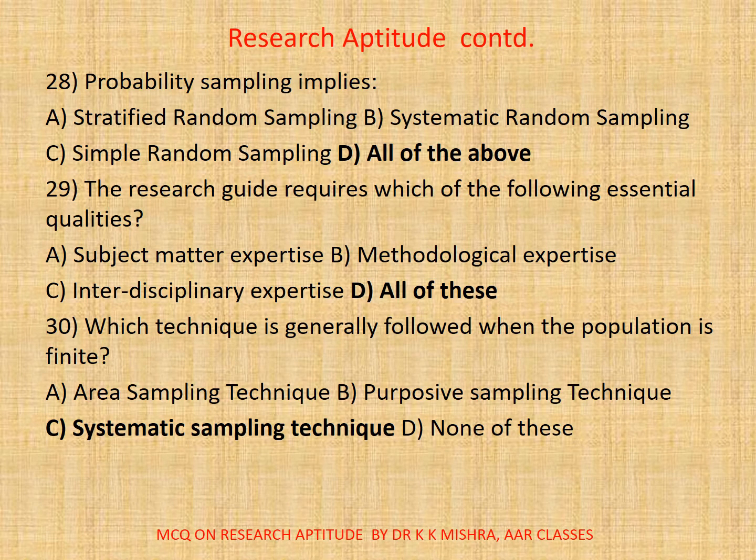Question twenty-eight: Probability sampling implies A: Stratified random sampling. B: Systematic random sampling. C: Simple random sampling. D: All. The correct option is D: All.